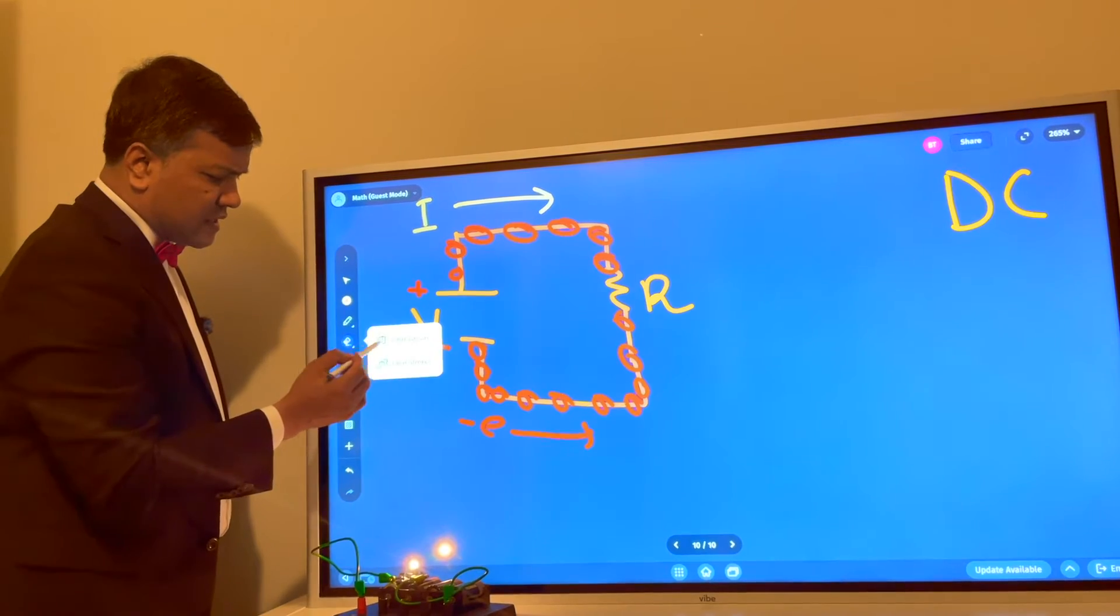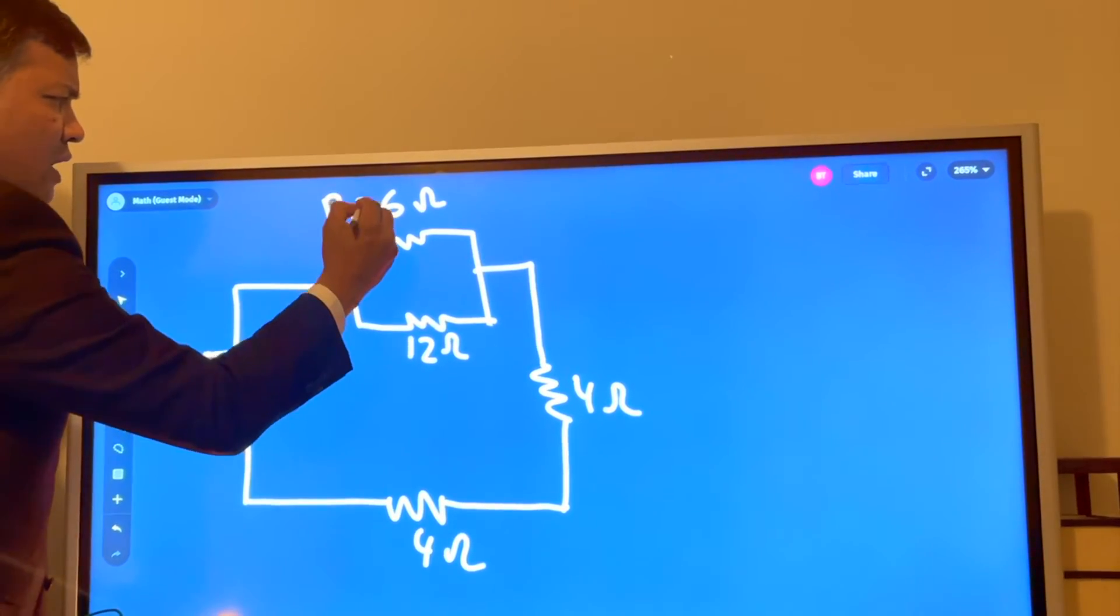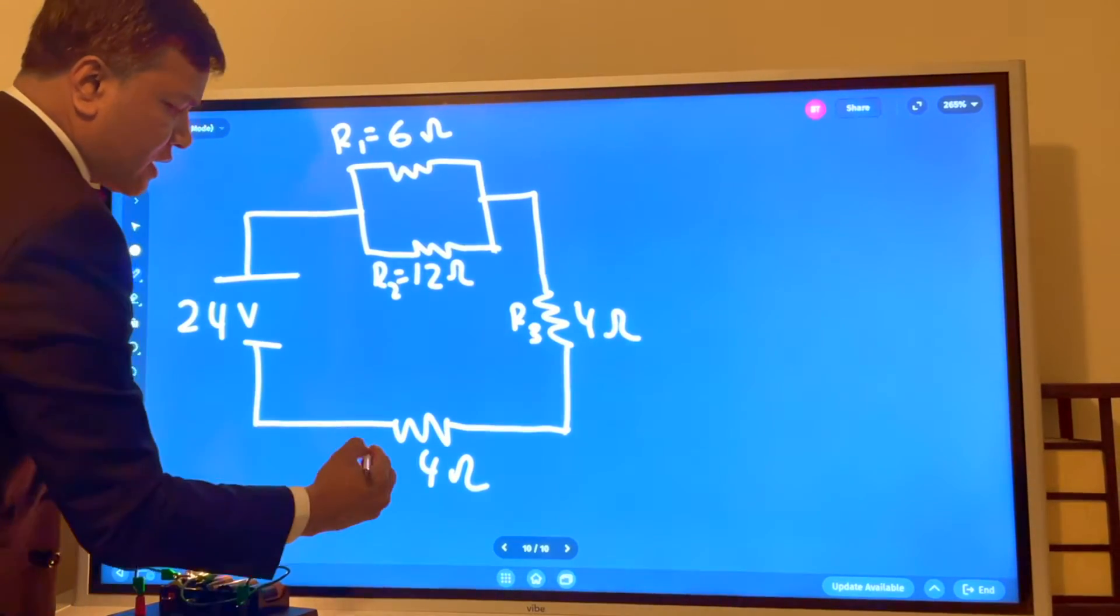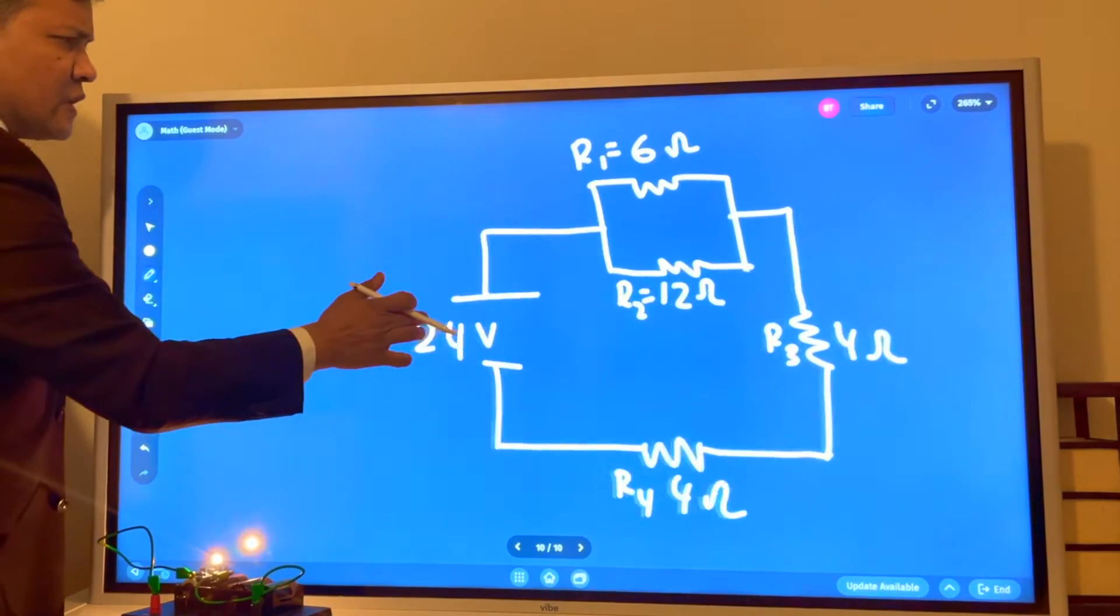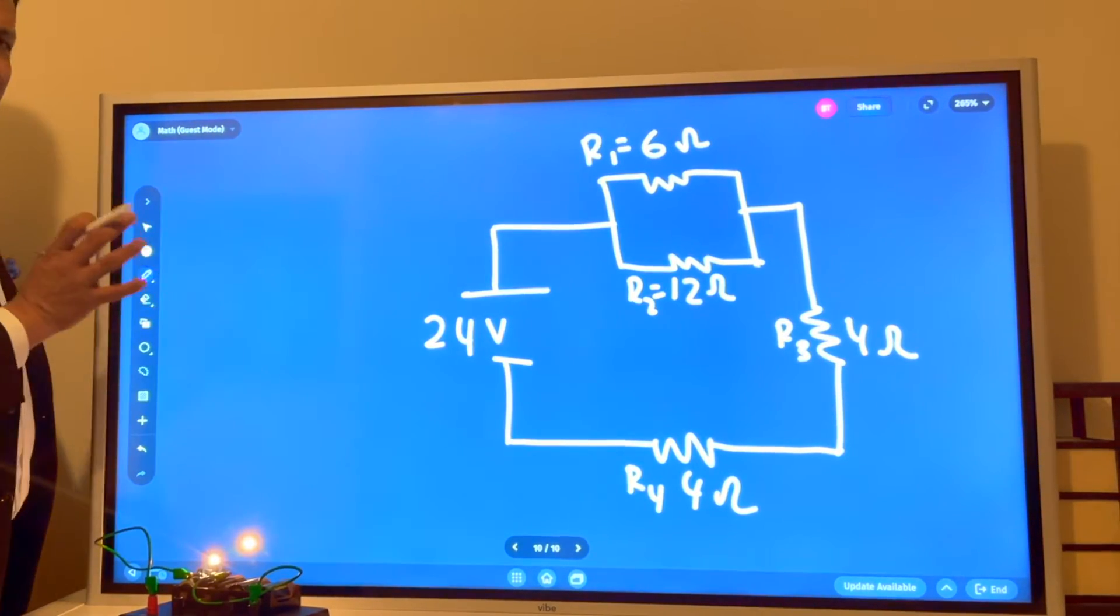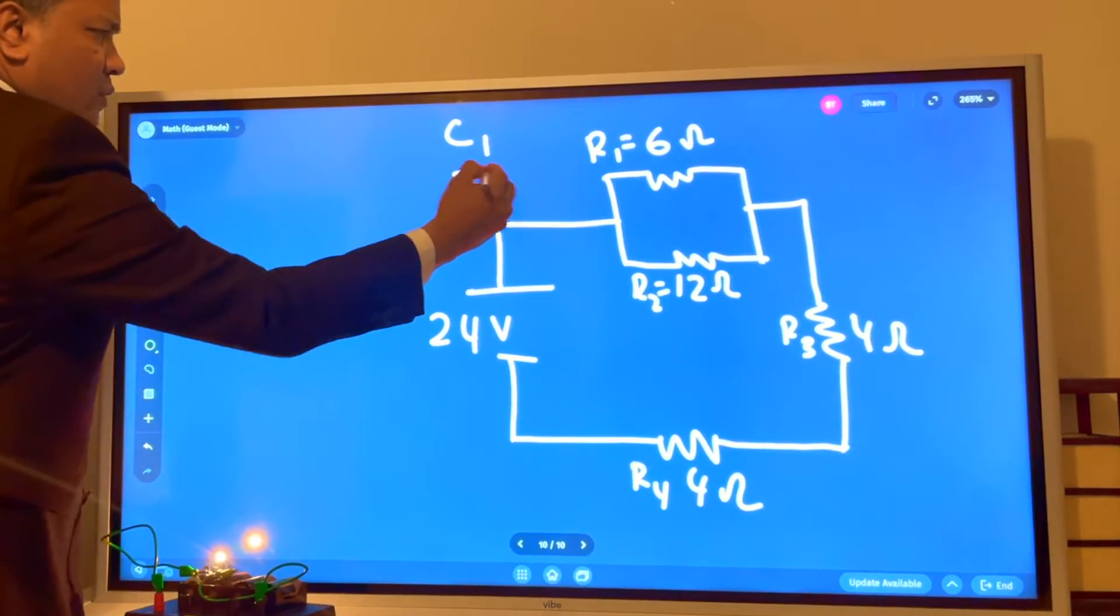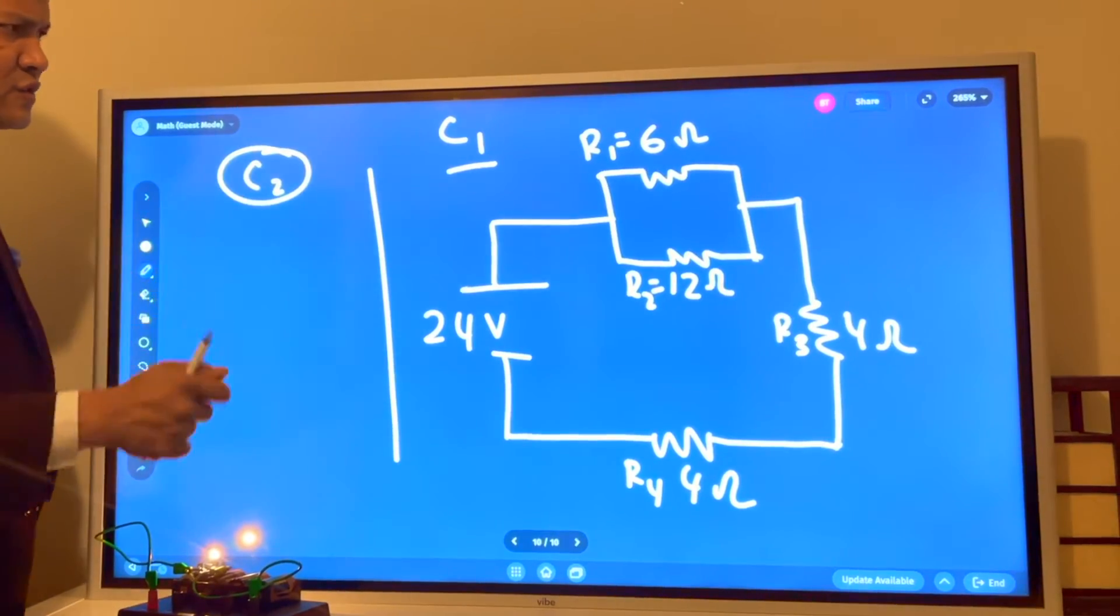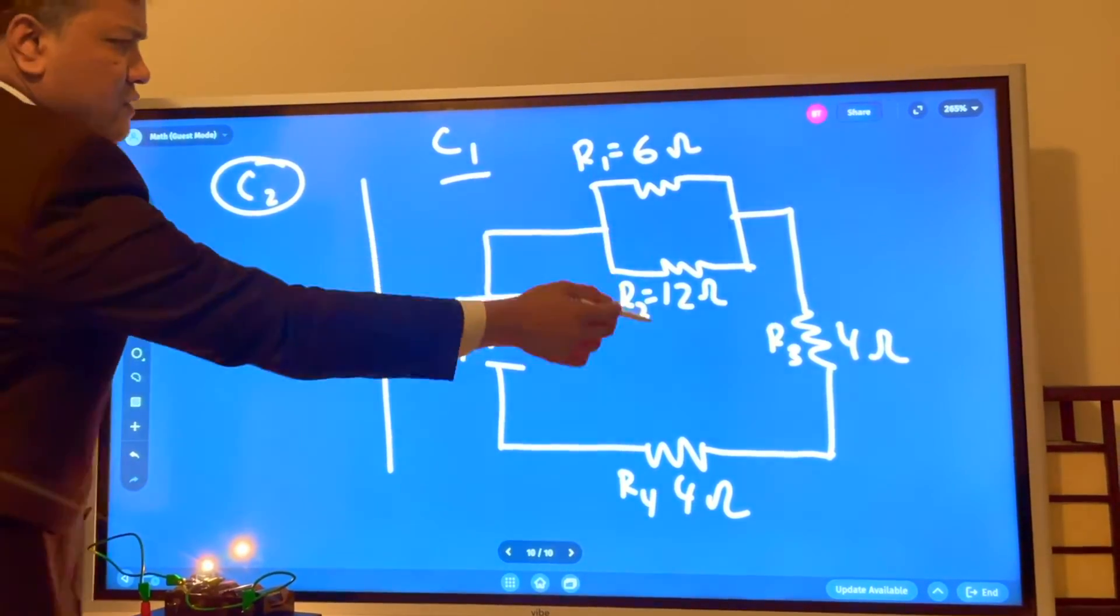So this is bulb number one, this is bulb number two, this is bulb number three, and this is bulb number four. This is a DC circuit. We're going to use Ohm's law to turn it to a simple circuit. We're going to call it circuit number one. Now we're going to draw circuit number two with three resistors. Let's first find the equivalent resistance for these two resistors.